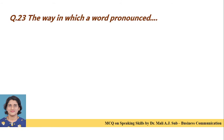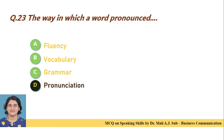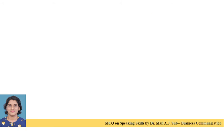Question 23: The way in which a word is pronounced. Option A: fluency. Option B: vocabulary. Option C: grammar. Option D: pronunciation. Correct answer is Option D — the way in which a word is pronounced is pronunciation.